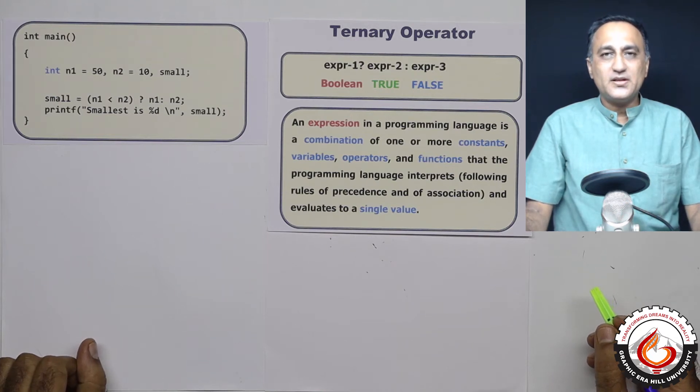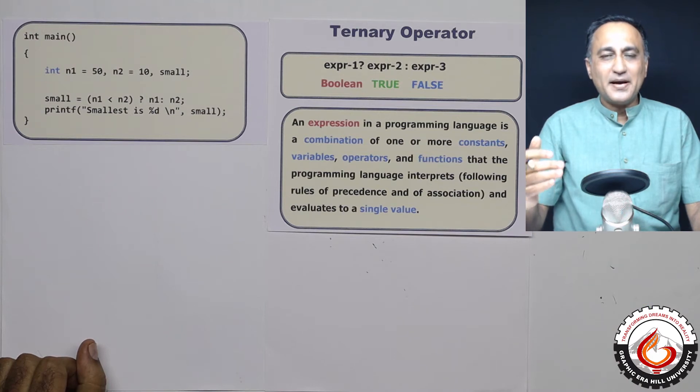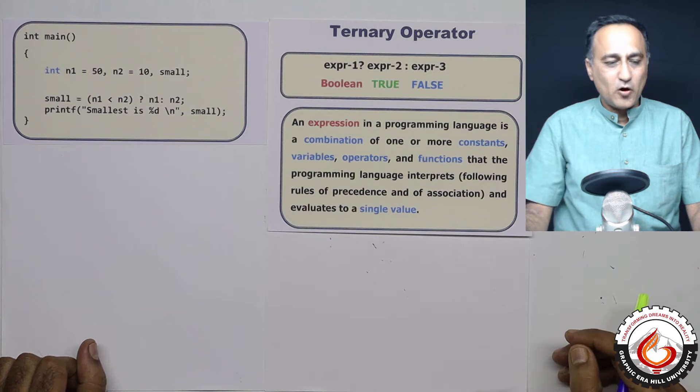The discussion is now going to be about the ternary operator. By the word ternary, binary is two, ternary means three, that means there are three things in this particular operator.